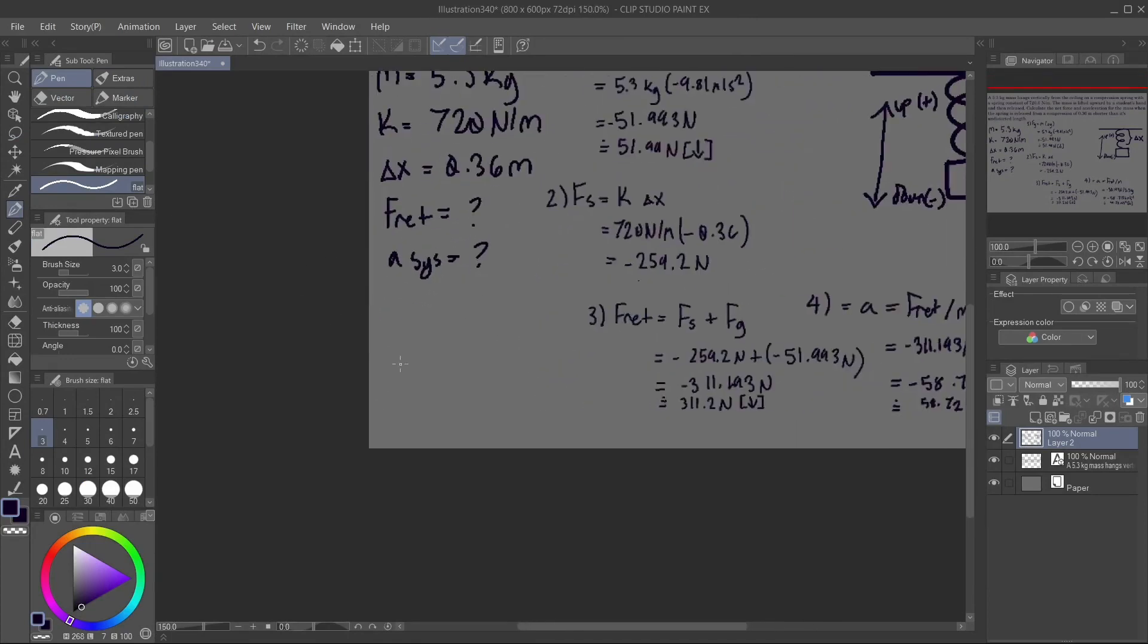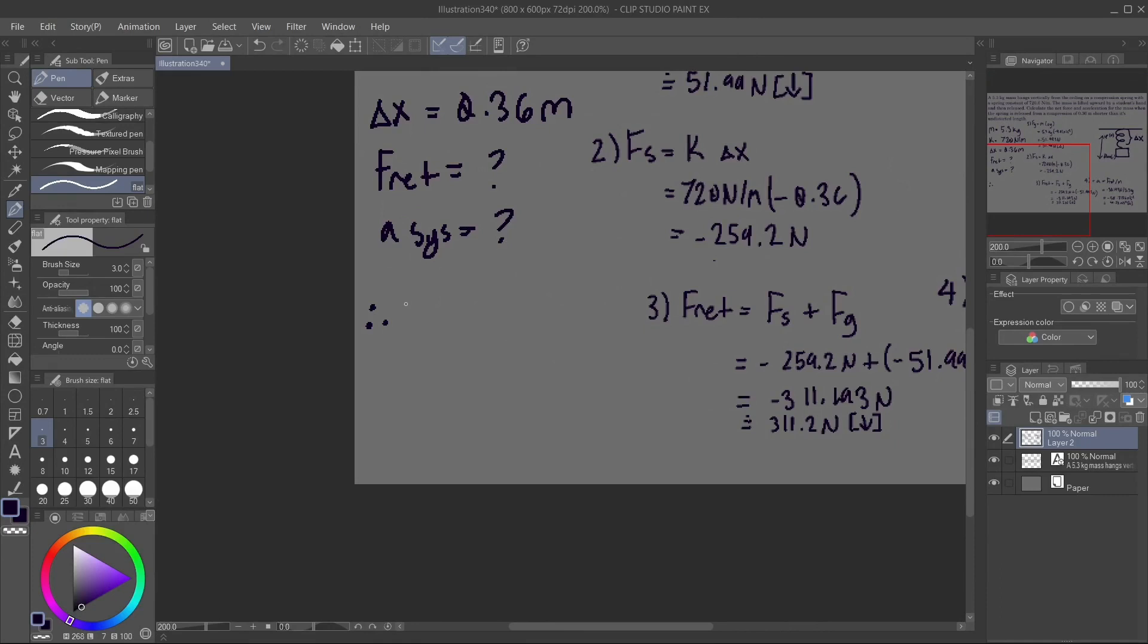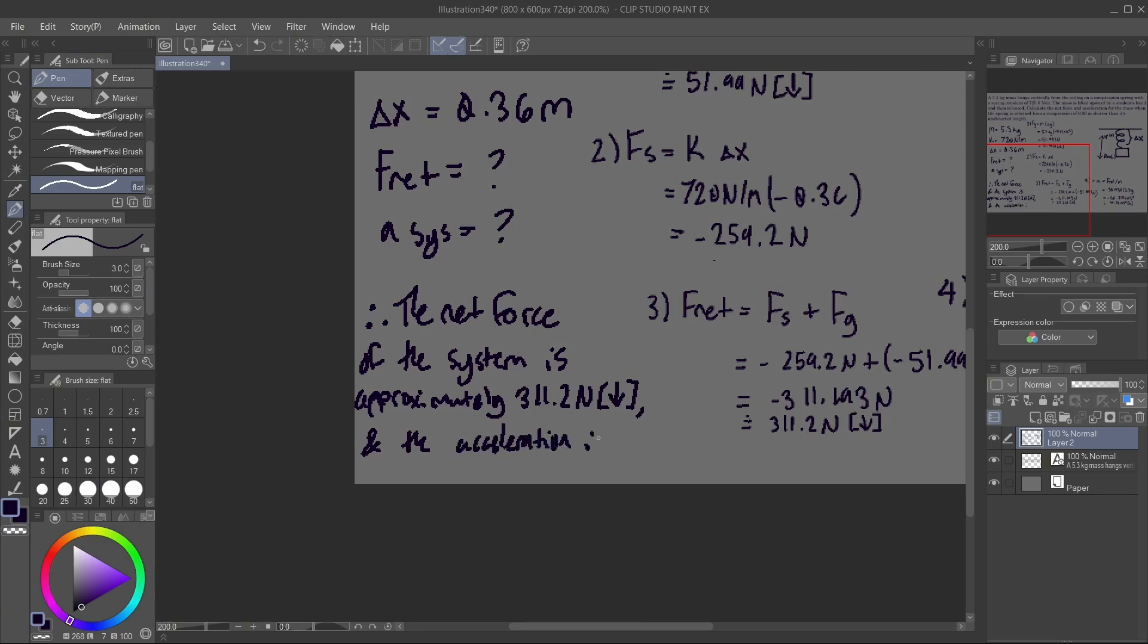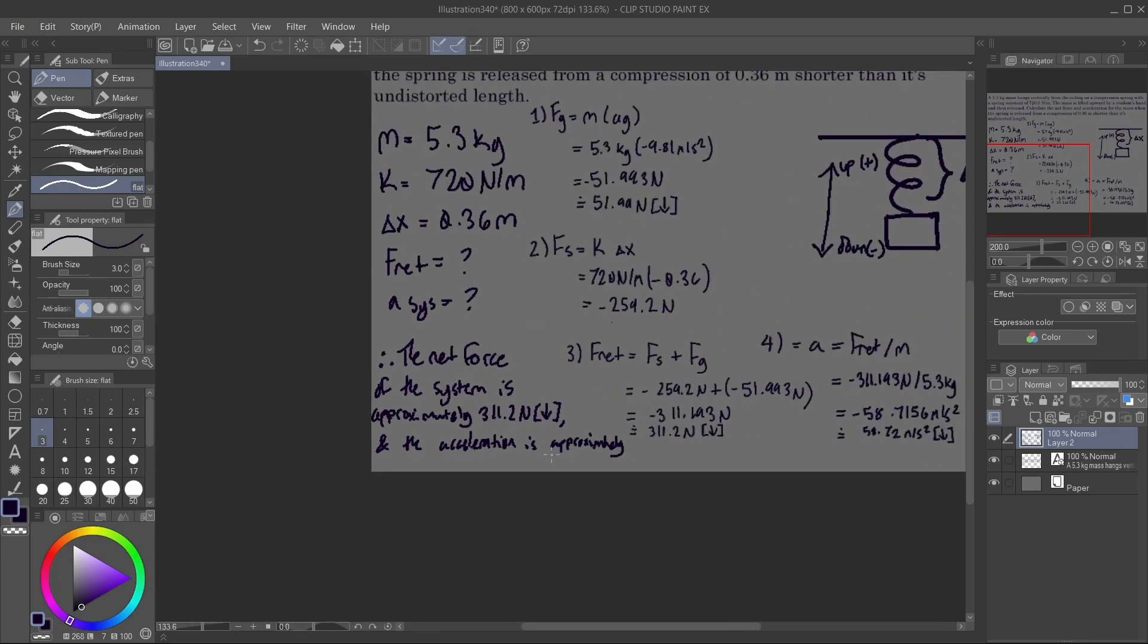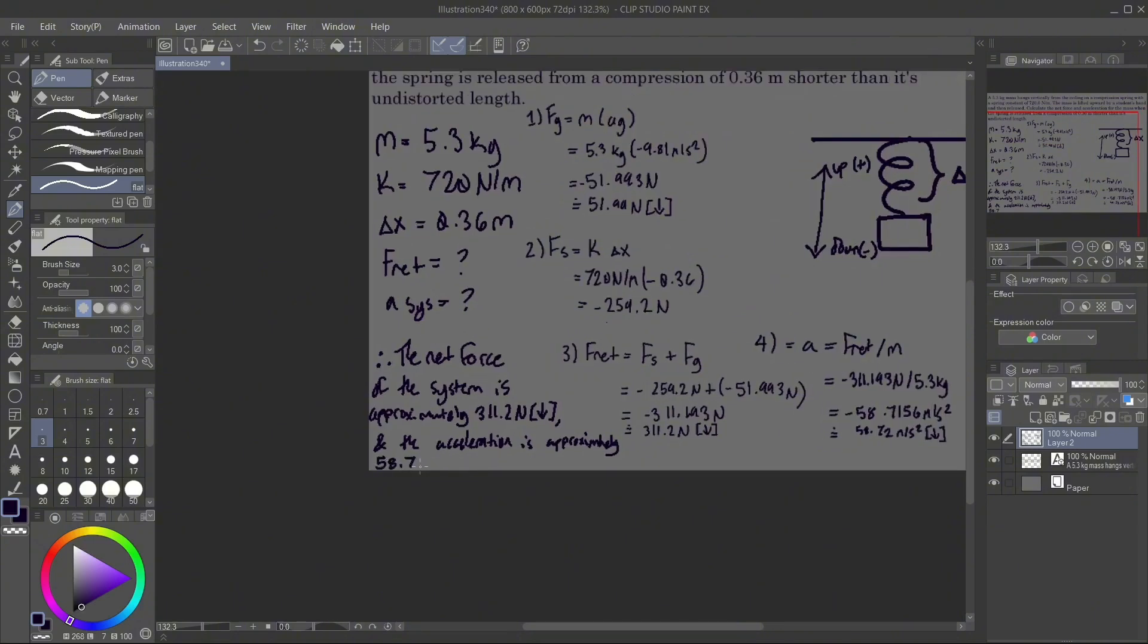Now that we're done all of this, we can finally write our closing statement. Therefore, the net force of the system is approximately 311.2 newtons down, and the acceleration is approximately 58.72 meters per second squared down.